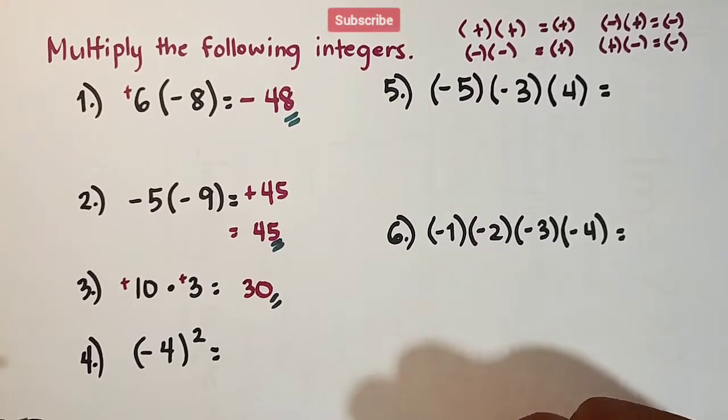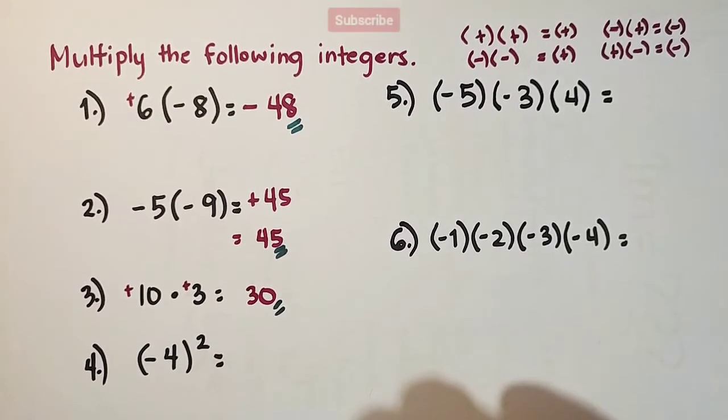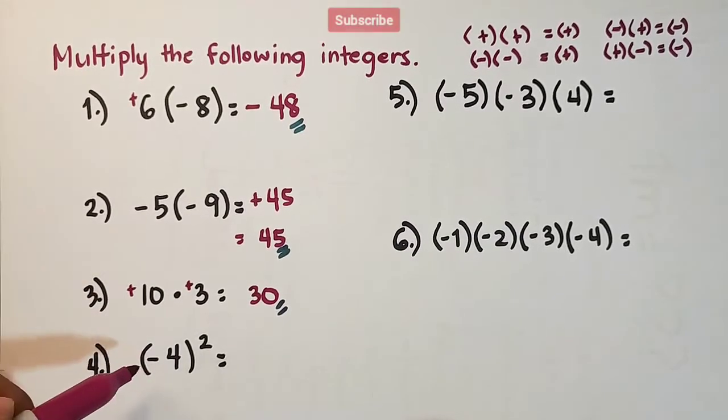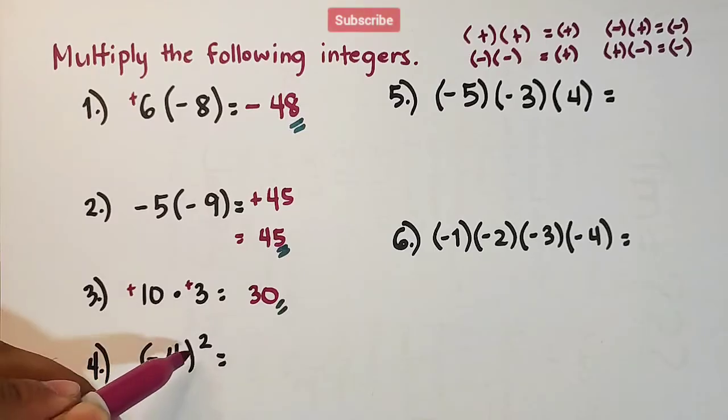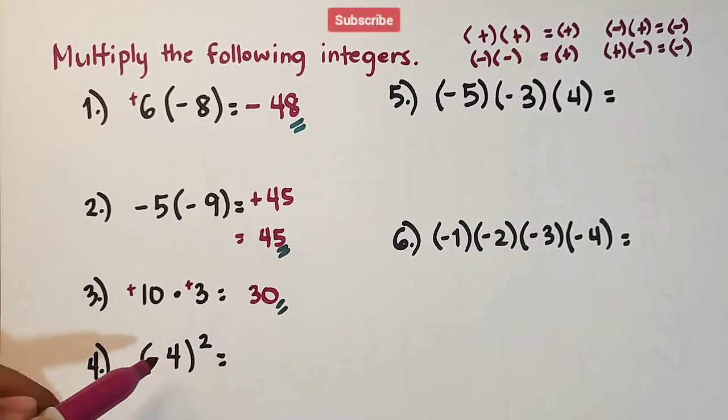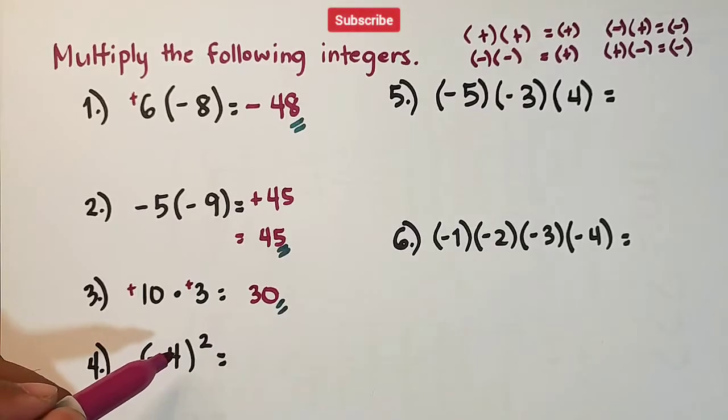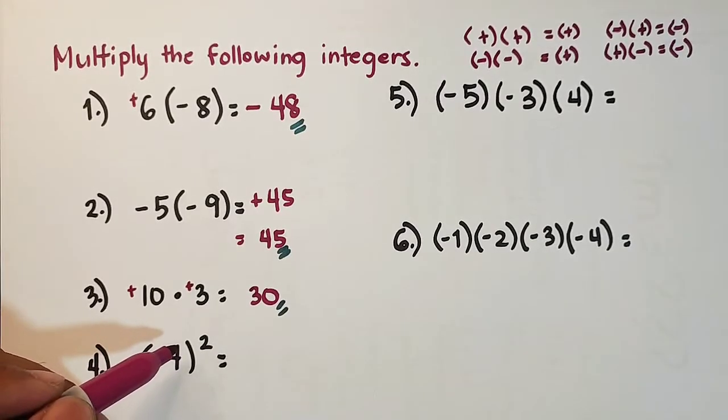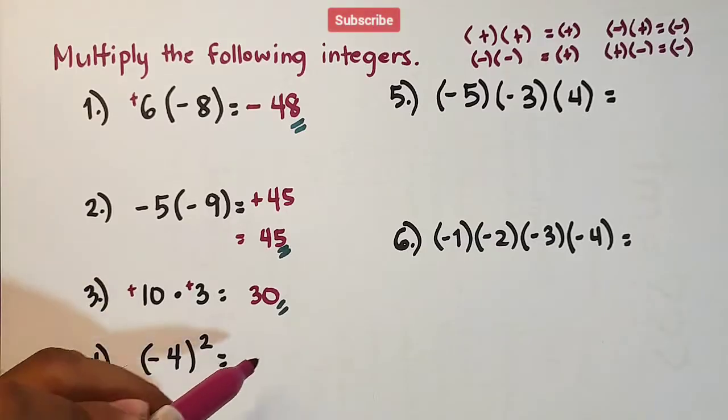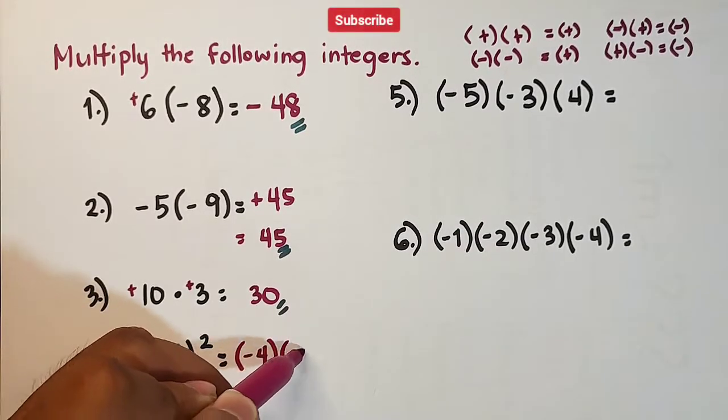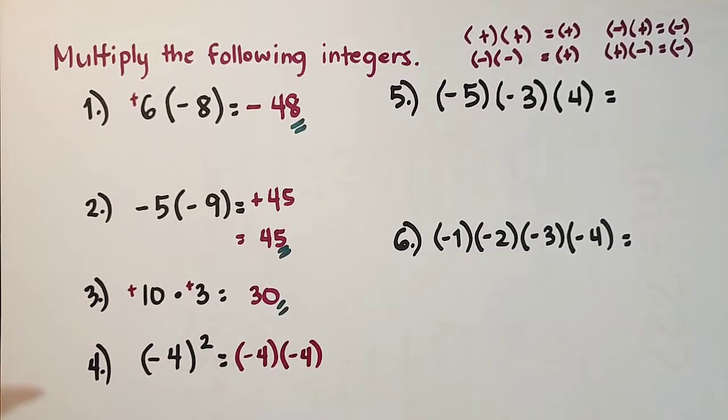Now, let's move on with number four. For number four, we only have one integer. As you can see, we have here negative 4 raised to the second power. Here, your exponent 2 indicates that we will multiply negative 4 twice to itself. So, it will look like this: negative 4, enclosed by parenthesis, times negative 4.